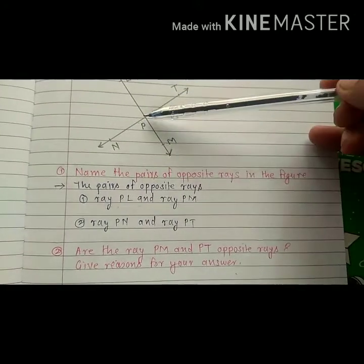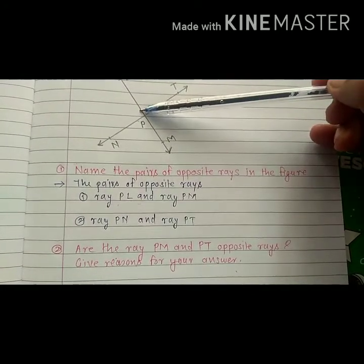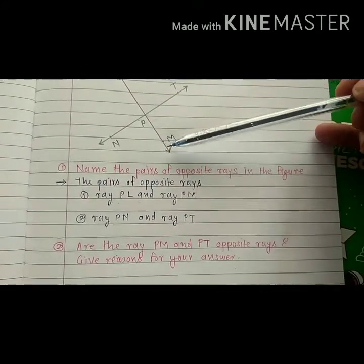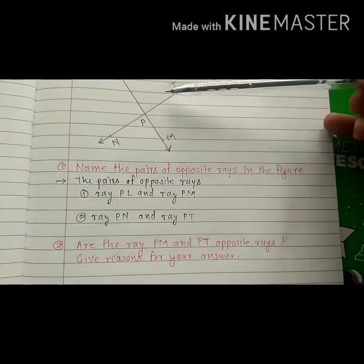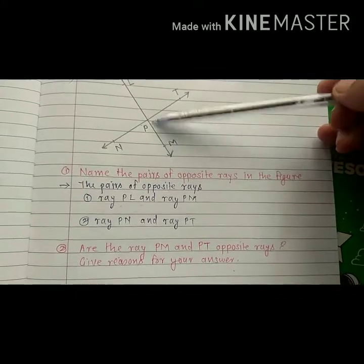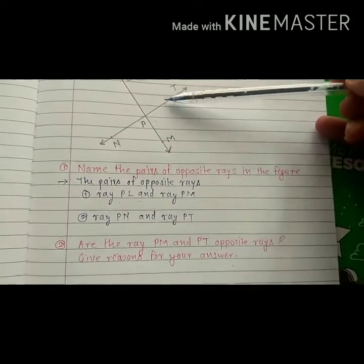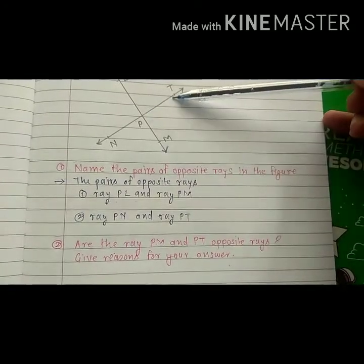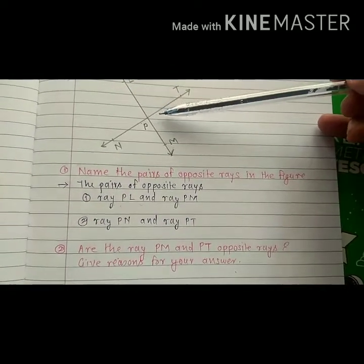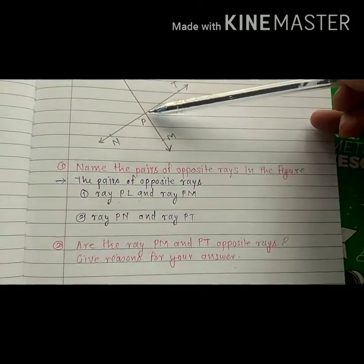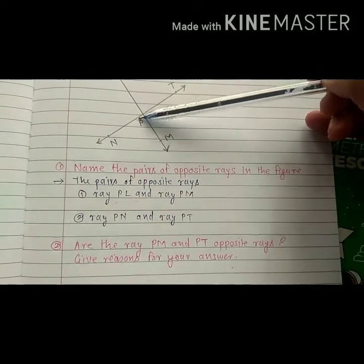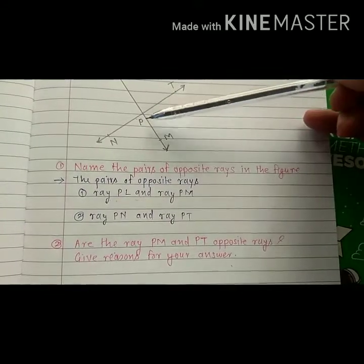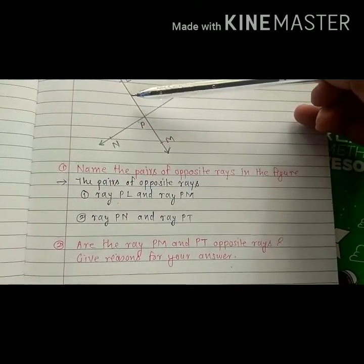See here, ray PM and ray PT — P is the common origin. But ray PM and ray PT do not form a straight line. They form an angle at P.